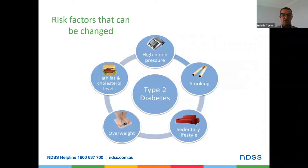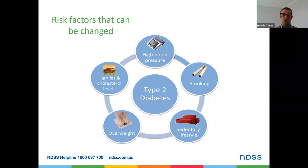Now, risk factors that can be changed — lifestyle factors. High blood pressure: maintaining appropriate blood pressure is just as important as blood glucose levels, and it is a risk factor for type 2 diabetes. Smoking really damages all parts of the body, but in terms of type 2 diabetes it interferes with how well insulin works, so a person smoking would have increased insulin resistance — meaning the insulin floating around the body wouldn't work quite as well.